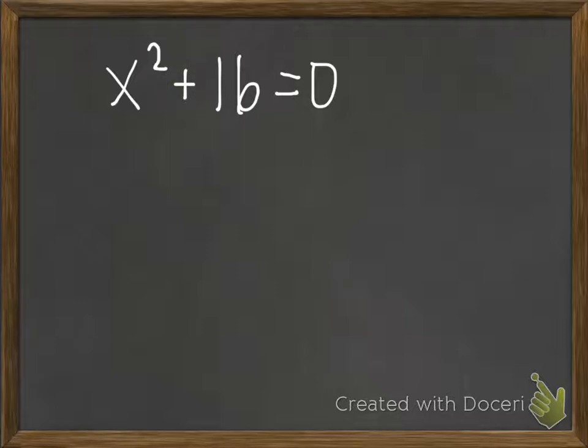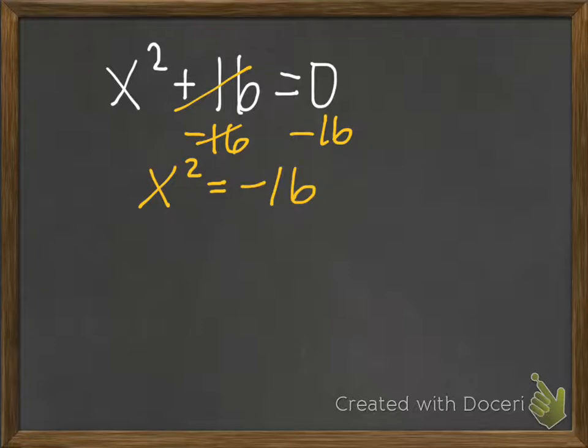So let's get x by itself. Let's subtract 16 from both sides, and I'm going to get x squared equals negative 16. Now, looking here, we've already kind of talked about this, but let's go ahead and look at it in this context.